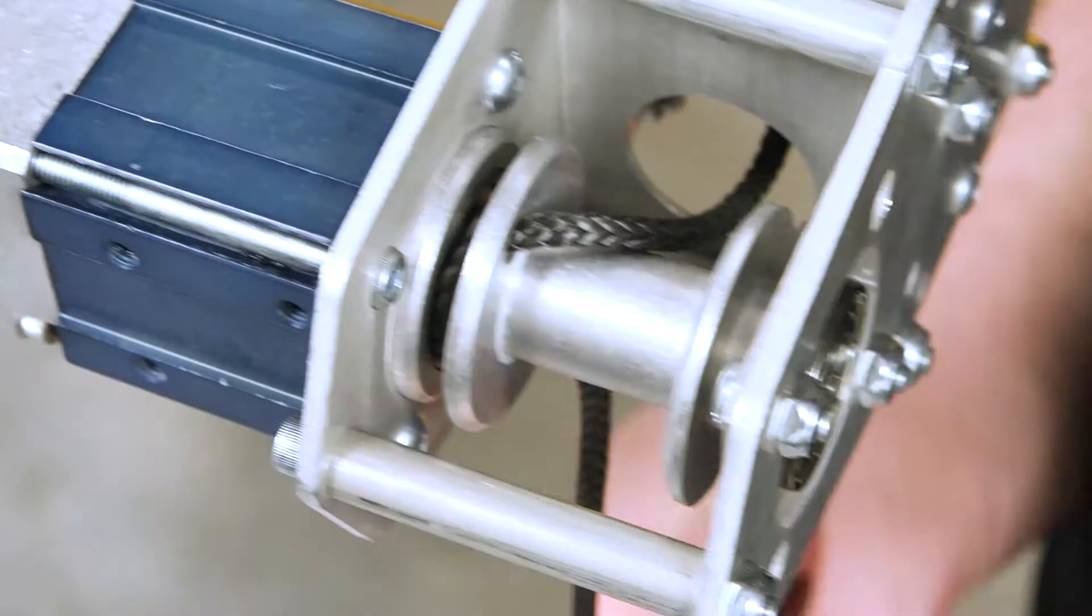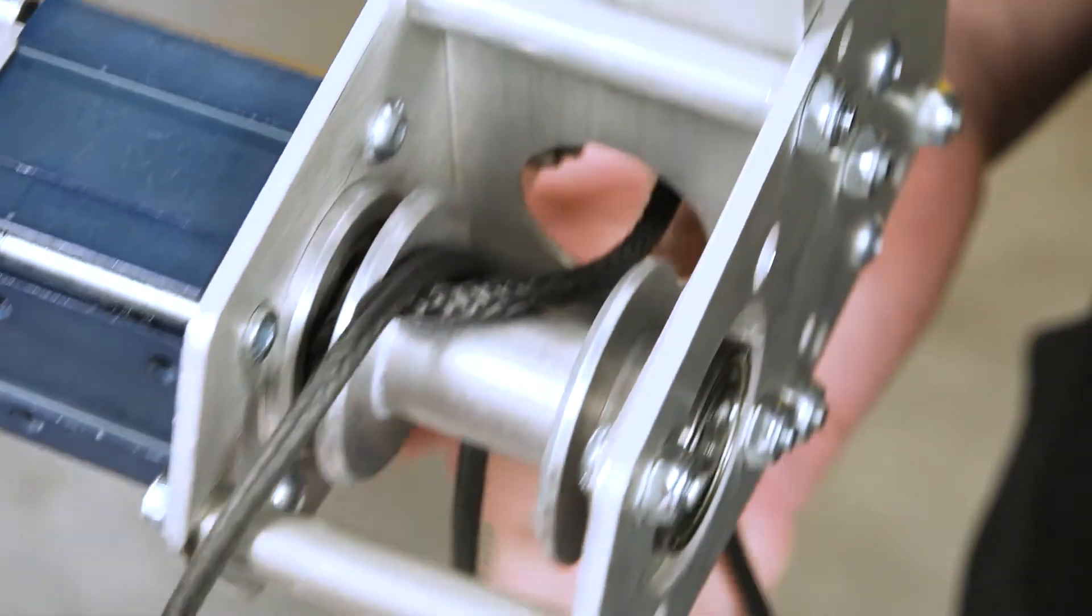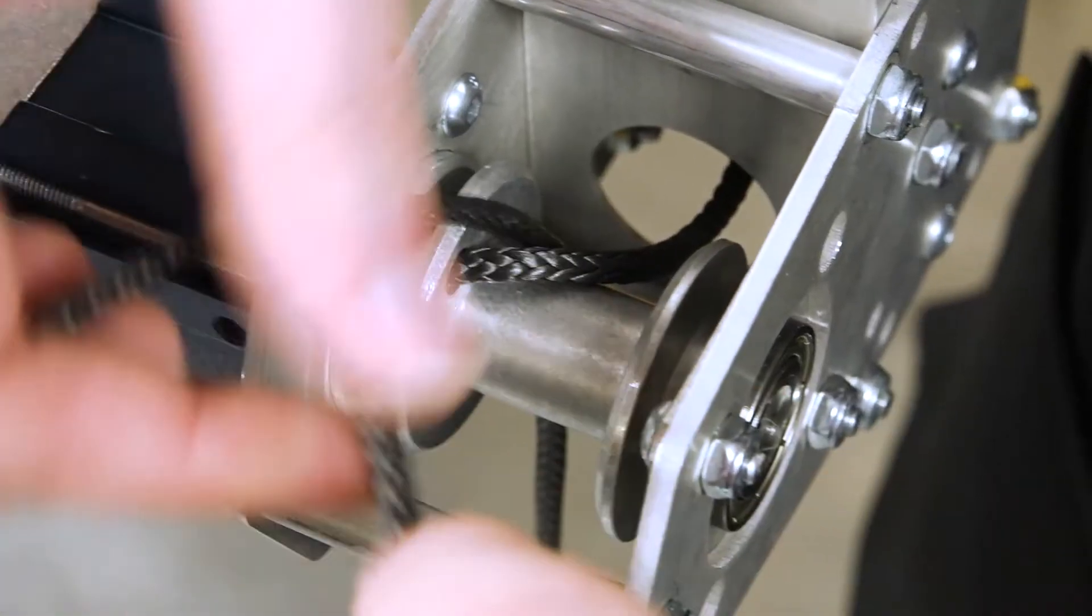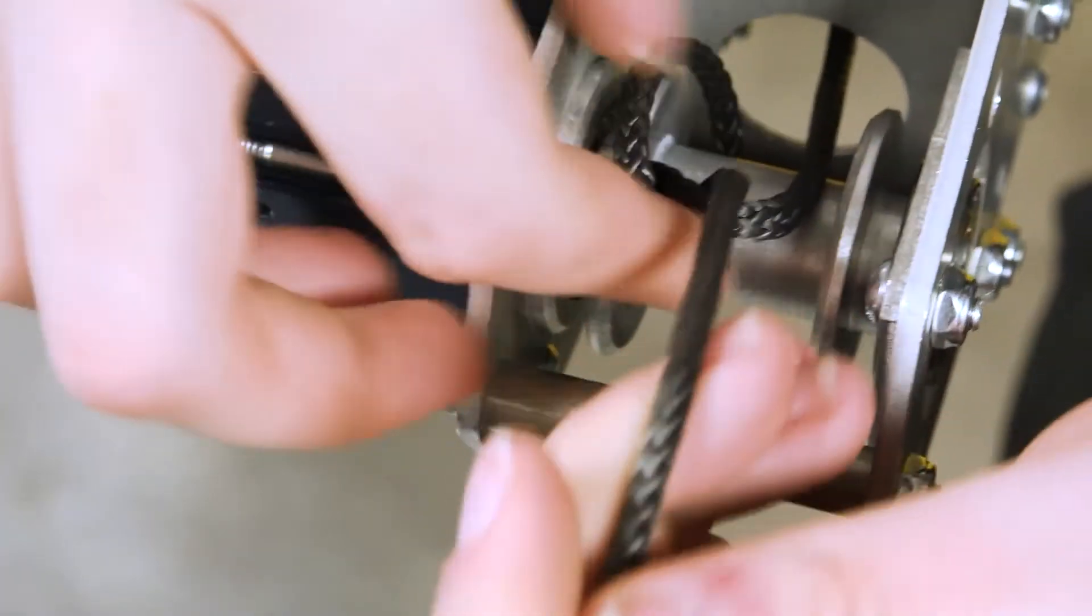Put the string up like so, wrap the string around underneath, pull it tight, put it over top of that loop you just made, and pull tight. It's essentially just a double knot.